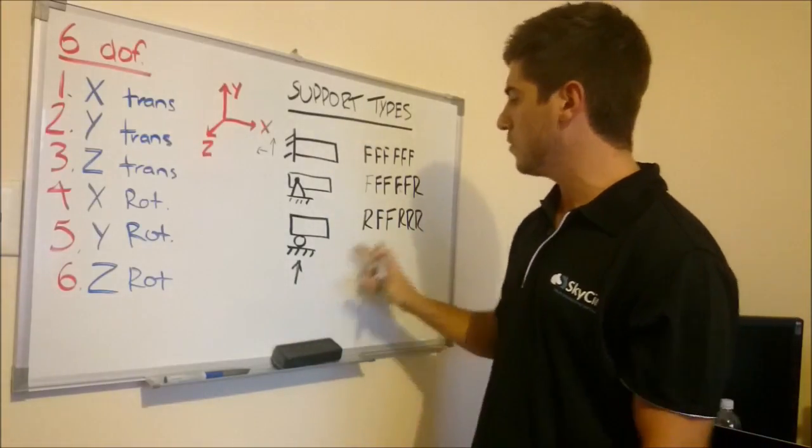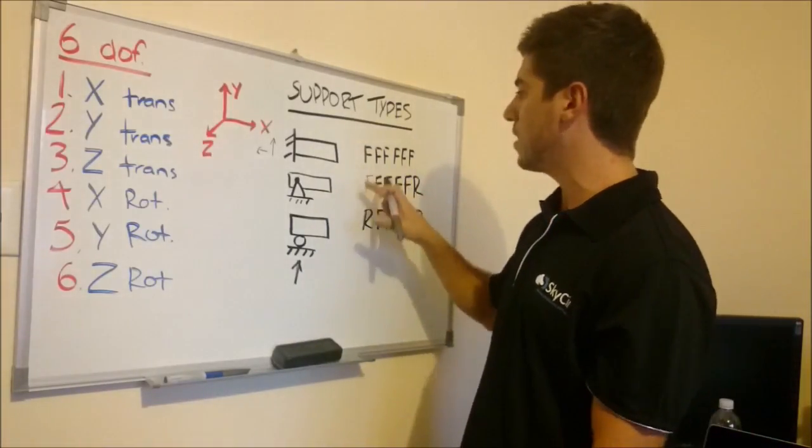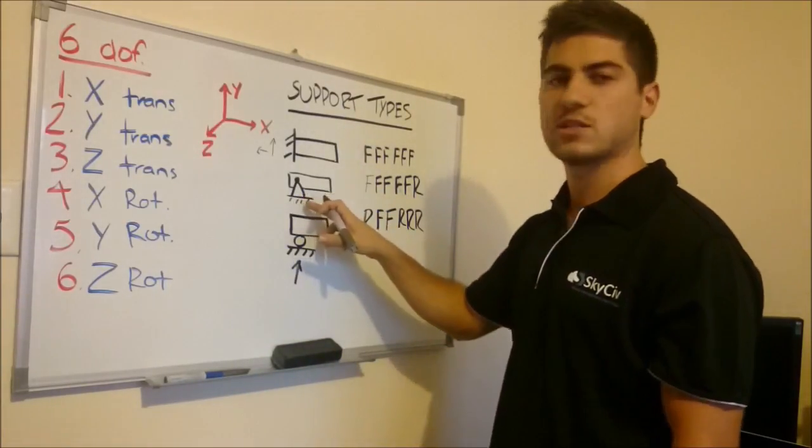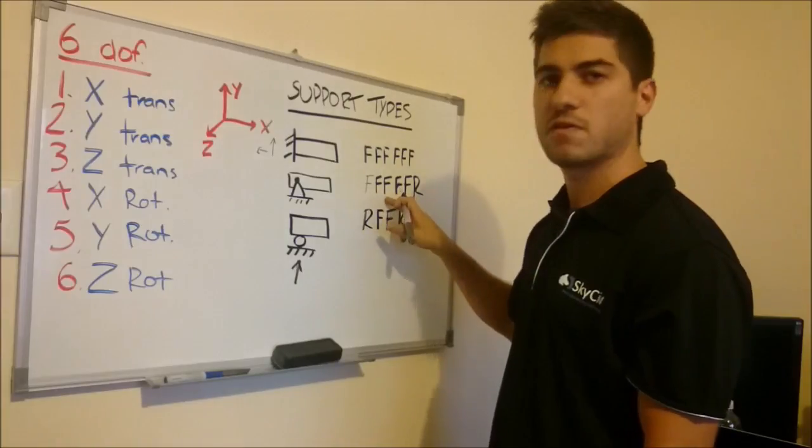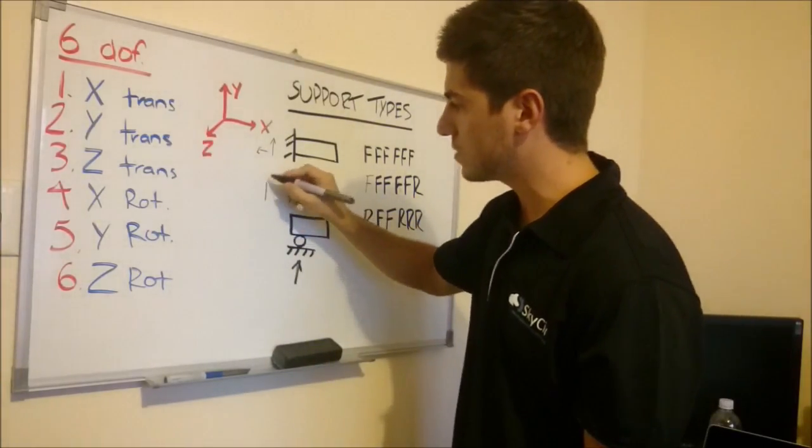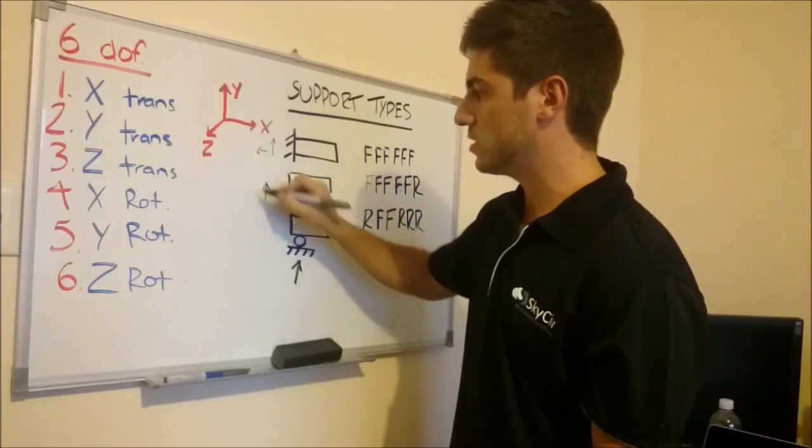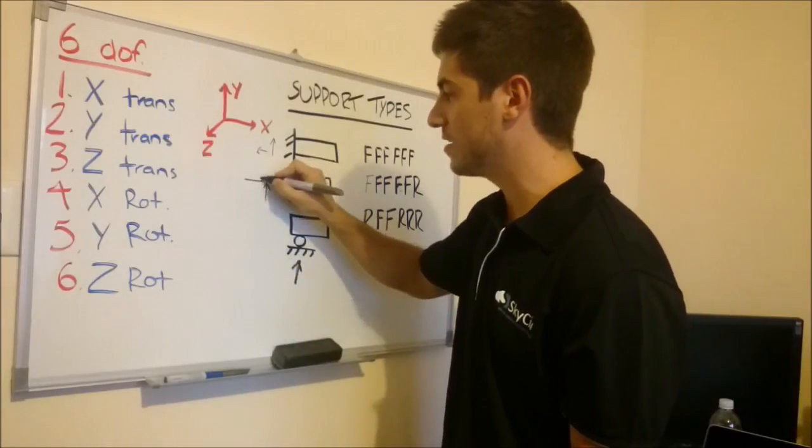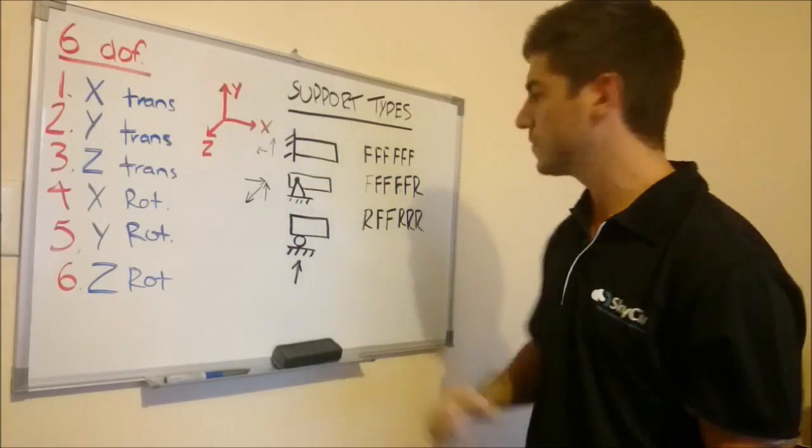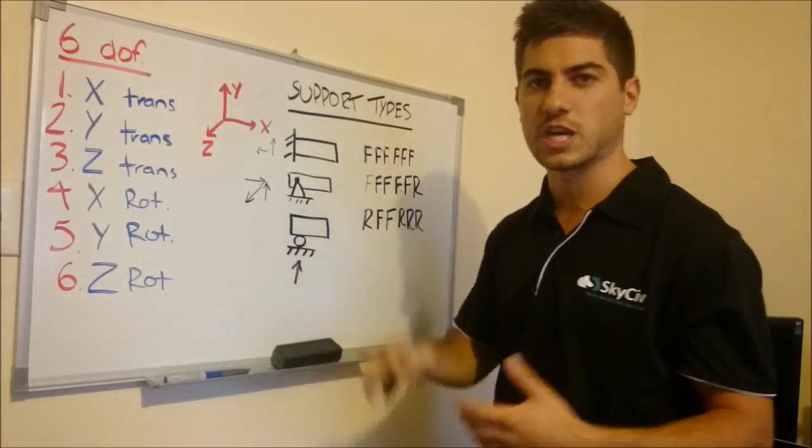Just another note here, you will also notice the pattern, but wherever there's an F, you will get a reaction. So for instance, if I take this pin support here, I have FFF. So all 3 of my translations are fixed. I will get a Y reaction, I will get an X reaction, and I'll also get a Z reaction. So that's another way to check your work.